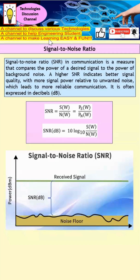In this video I'd like to define what is Signal-to-Noise Ratio. Signal-to-Noise Ratio, also known as SNR, is a measure used in communication that compares the power of the desired signal to the power of noise, as you can see from this equation.